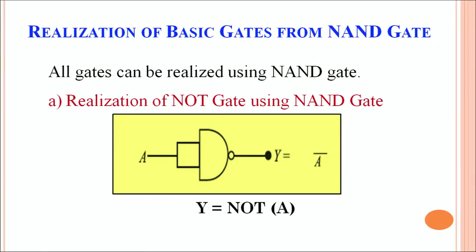Both the NOR gate and the NAND gate are termed as universal gates because they can be used to realize any of the gates we have studied. Let's see how a NAND gate works as a universal gate — each and every logic gate can be realized using a combination of NAND gates. To realize a NOT gate using a NAND gate, we simply fuse the two inputs together so that there is only one input terminal.